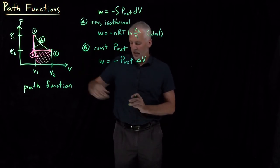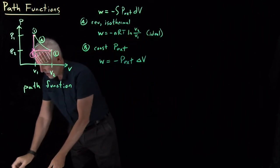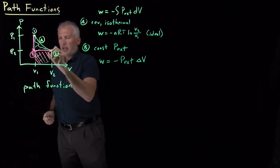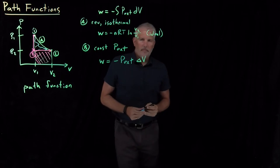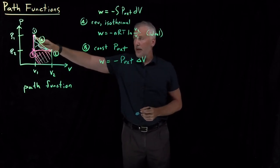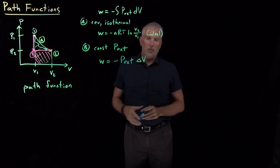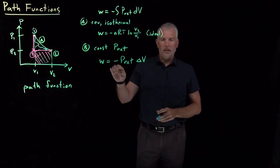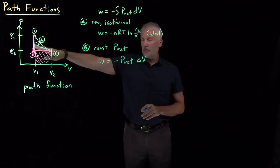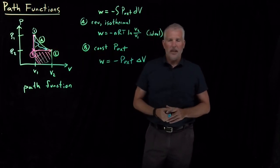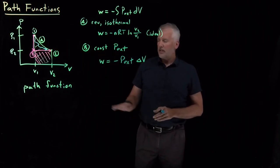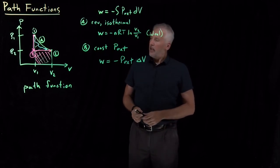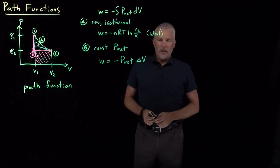If I hadn't taken the reversible isothermal path or the constant external pressure path — in fact, I could draw any arbitrarily complicated path I want. If I take some completely different path from state 1 to state 2, the work is going to be the area underneath that curve, which will be a different value than either of these. In principle, for every one of an infinite number of different paths I can take, I'm going to get a different value for the work — which is inconvenient and something we want to avoid.